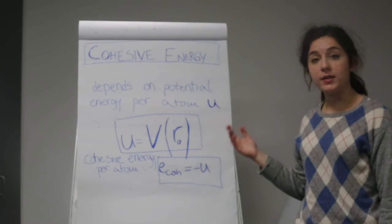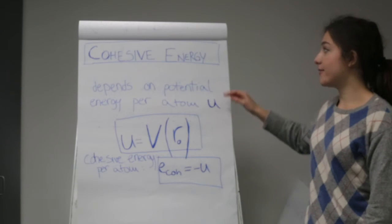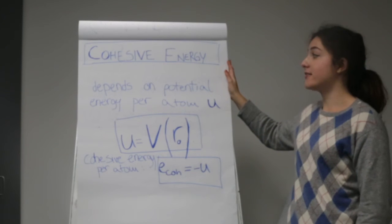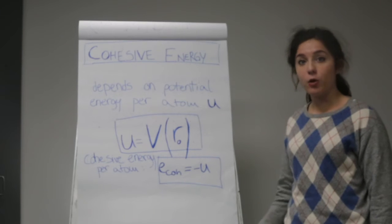The types of bonds in a material and the position of each atom or ion within the solid determine a very important property, which is the cohesive energy, which is defined as the energy required to separate all atoms to infinity.